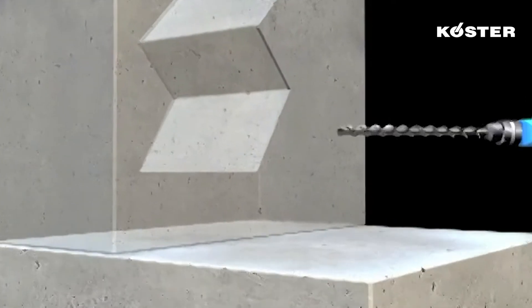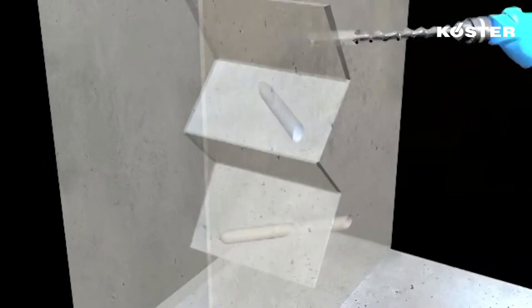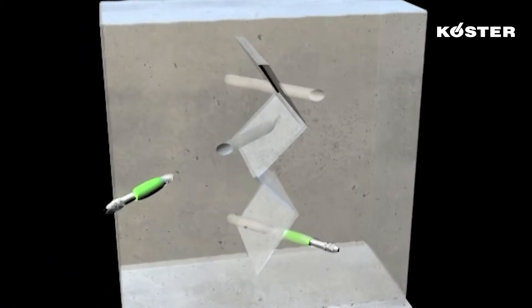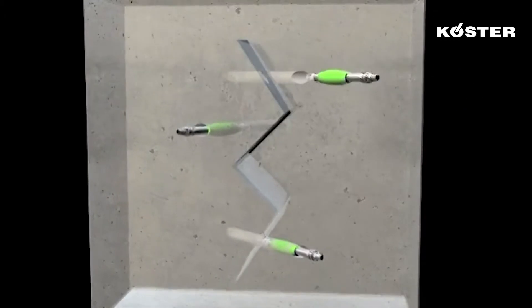The drill holes are installed at 45 degree angles on alternating sides of the crack. The injection valves, known as packers, are installed. Cracks wider than a half a millimeter are sealed with mortar.